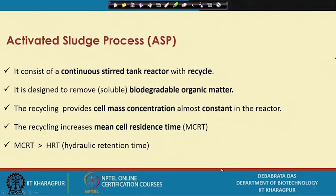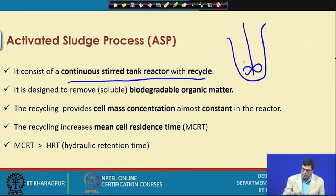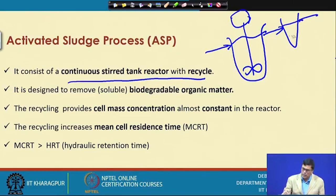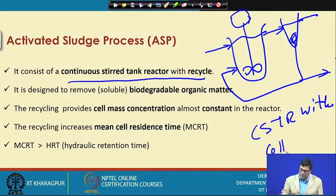What do we mean by the activated sludge process? The activated sludge process is the continuous stirred tank reactor with cell mass recycling. This is a CSTR — there is an inflow and outflow system — with cell mass recycling, meaning a part of the cell is separated and recycled back into the system. This is called CSTR with cell recycling.